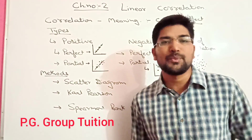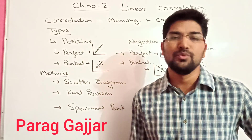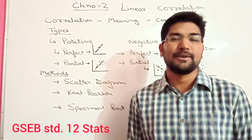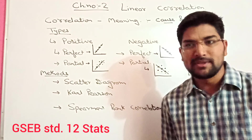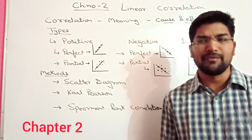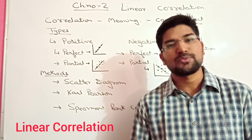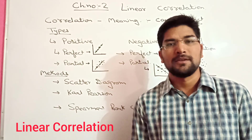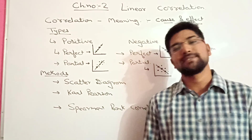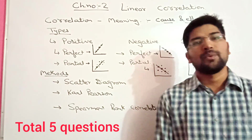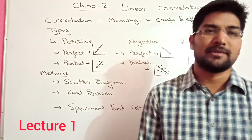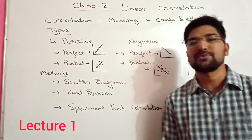Hello friends, let's start with Chapter 2 — Linear Correlation — from Statistics for Gujarat Board Standard 12th. First of all, we should know about the weightage of this chapter. The chapter consists of 12 marks basically — 5 questions: 1 MCQ, 1 liner, 2 marker, 3 marker, and 5 marker. That makes up the 12 marks weightage.